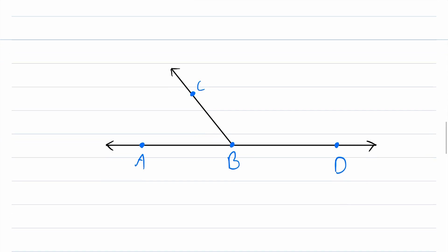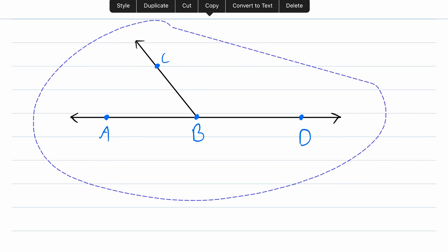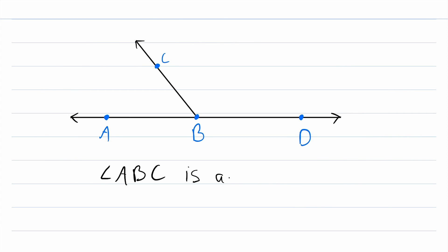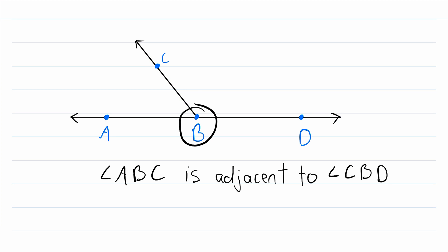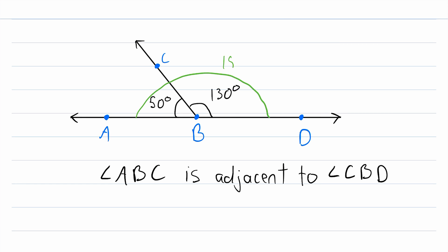Now let's take one more look at an example of angles that are adjacent. In this diagram, angle ABC is adjacent to angle CBD. They share a vertex of B, they share a side of BC, and they share no interior points. Additionally, if the measure of angle ABC was 50 degrees and the measure of angle CBD was 130 degrees, then we could add these measures together to get the measure of the larger angle ABD. The measure of that angle would be 50 plus 130, which is 180 degrees. So adjacent angles create a larger angle, and you can find the measure of the larger angle by adding up the measures of the adjacent angles.